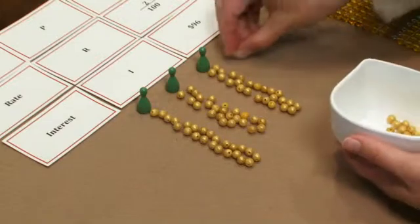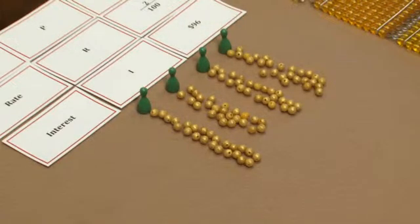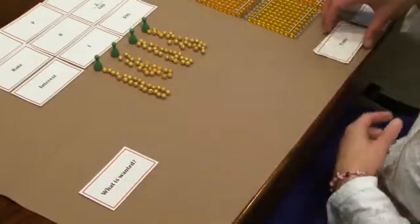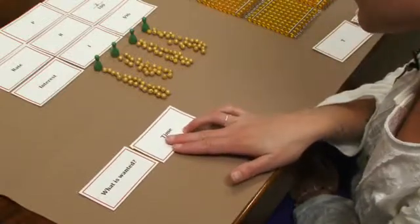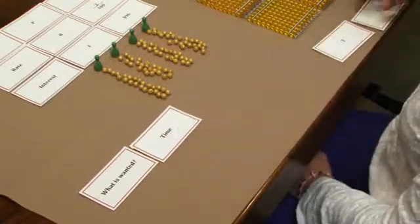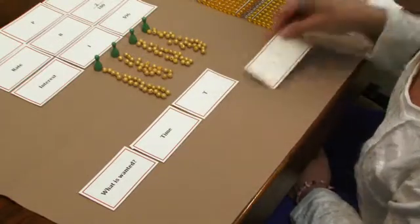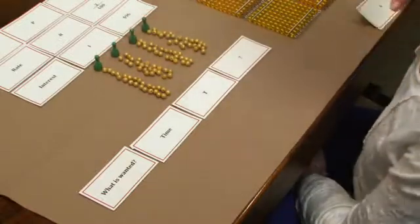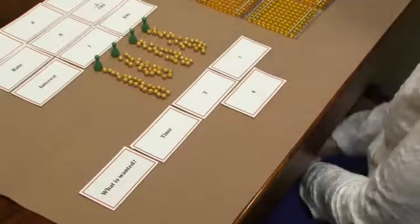We still have beads, and that represents a fourth year. I'm now out of beads. The information that I wanted to find was how many years I had left my money in the bank. So the time, and we know that by the number of Skittles. So we left our original principal in the bank for four years.